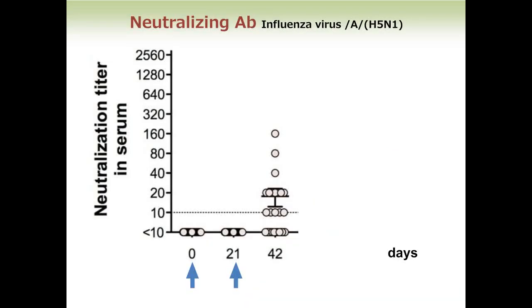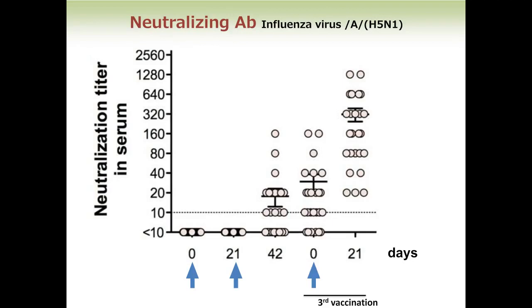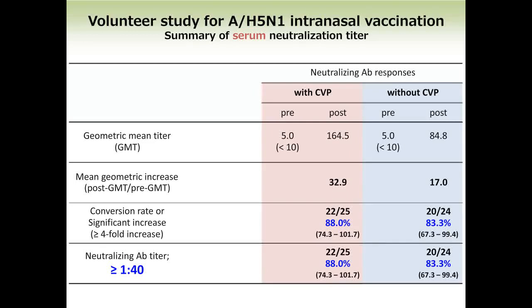The result was as follows. This shows the neutralizing titer after the second vaccination, and after the additional vaccination, all individuals responded. The mean geometric increase is 32.9, the seroconversion rate is 88%, and the neutralization antibody titer of more than 1:40 is achieved in 88% of subjects. So for naive individuals, a third vaccination is necessary.